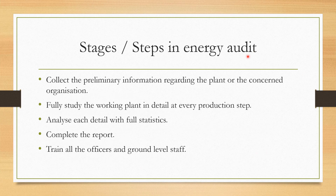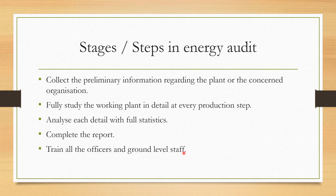The stages and steps in energy audit: collect the preliminary information regarding the plant or the concerned organization — the basic data should be collected. Fully study the working plant in detail at every production step, because you have to pay attention to every step. Analyze each detail with full statistics — how much actual usage is there. Complete the report. Train the officers and ground-level staff, providing training programs to the people who are working. Then minimize environmental effects, for example greenhouse gases — if you are working towards saving energy, you are making the environment a better place to live in. Then minimize the wastage without affecting your production.